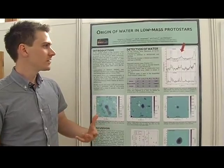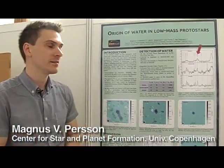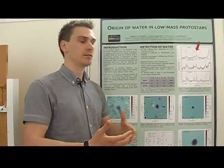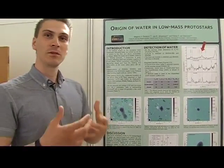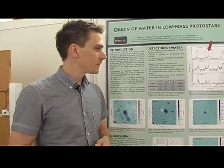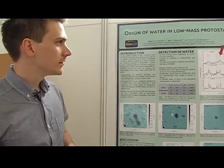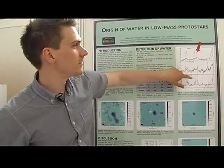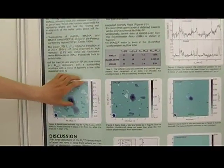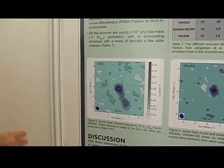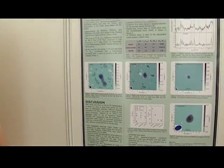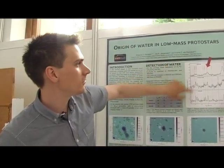I've observed forming stars in relatively nearby star-forming regions in our galaxy. These are low-mass protostars, and they are thought to eventually resemble our own sun when they finish forming. What we looked for in these observations was water, and as we see here in the spectra, we detected water in all of our sources. These are maps showing the water emission in all four sources.